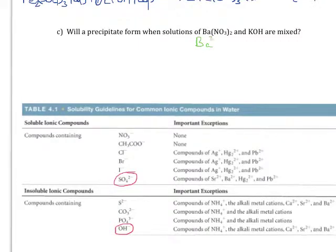You should know, based on its location in the periodic table, that barium has a charge of two positive. You should recognize the nitrate polyatomic ion as NO3 with a negative charge. Potassium has a positive charge and the hydroxide ion has a negative charge.